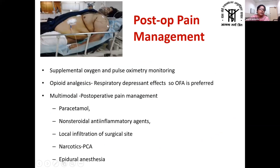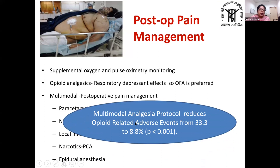The patient should be nursed in HDU with appropriate positioning, supplemental oxygen, and continuous pulse oximetry monitoring. Opioid analgesics should be avoided due to their respiratory depressant effect in the post-operative period. Multimodal analgesia is preferred — paracetamol, NSAIDs, and liberal local anaesthetic infiltration at the surgical site. If narcotics are needed, patient-controlled analgesia can be used. Where indicated, epidural analgesia can be placed. A multimodal analgesia protocol reduces opioid-related adverse events from 33.3% to 8.8%, so opioid-free anesthesia should be the goal for these patients.